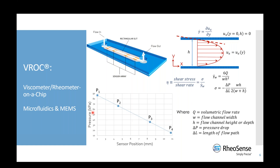Just a quick overview of our VROC technology for anyone not familiar, and to point out why our instrumentation is suitable for this situation. We're taking samples and doing measurements over extended periods at elevated temperatures. Our VROC technology — viscometer rheometer on a chip — is microfluidics and MEMS-based. We have a microfluidic flow channel with pressure sensors spaced across the base. We control the flow rate and monitor the pressure drop to calculate shear rate, stress, and shear viscosity.